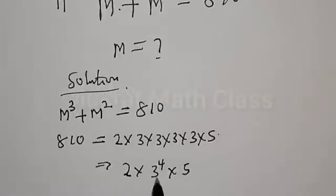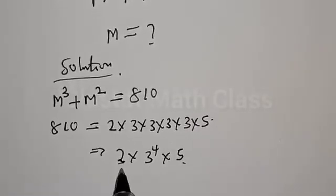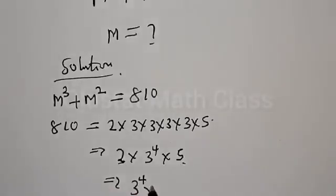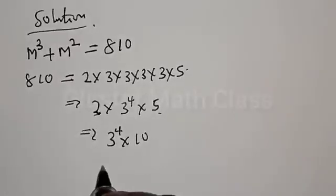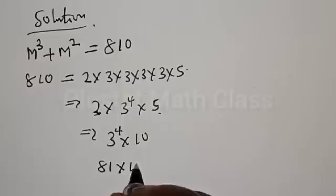Then we have 3 to the power of 4, with 2 here and 5 here. This implies that we have 3 to the power of 4 times 5 times 2, that is multiplied by 10. So 3 to the power of 4 is 81, multiplied by 10.